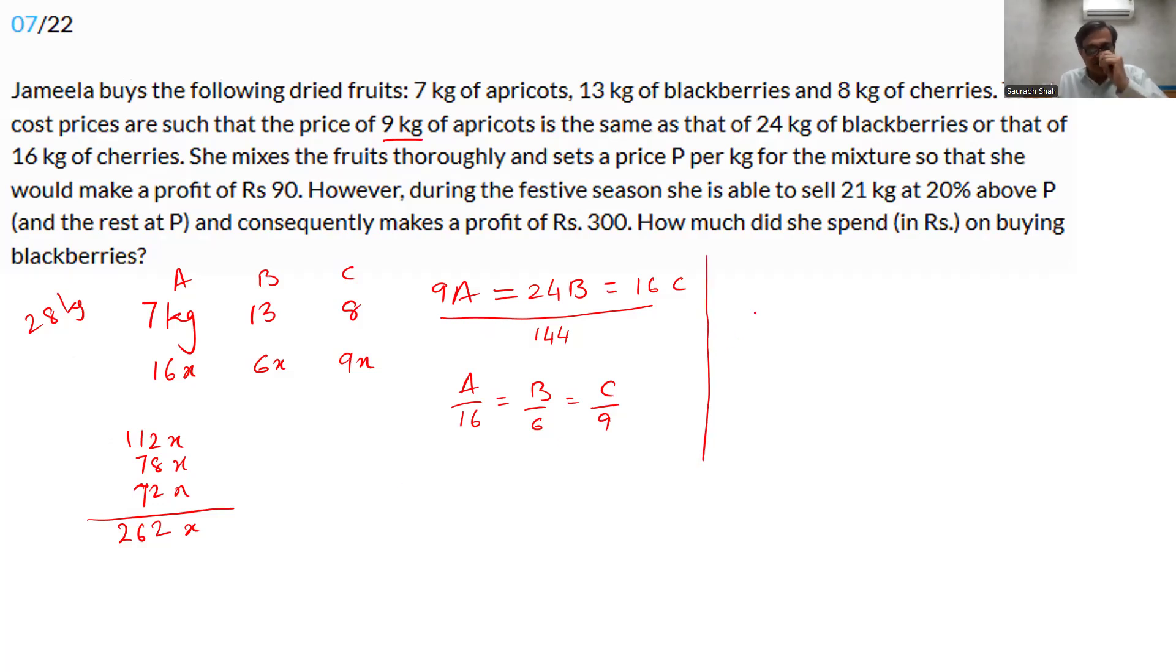Now let's work out something on the sales side. We already worked out the cost. On the sales part, the question says P is the cost. We are selling everything at the rate P. But if 21 kilograms are sold at 20% above P, there is an extra profit. Instead of 90 rupees profit, we have a 300 rupee profit. So extra 21 kilograms sold at extra cost of 20% of P is 210 rupees. So 20% of P is equal to 10 rupees. Price is 50 rupees. The selling price of the entire mixture, 28 kilograms is 50 rupees. So the total sales is 1400, out of which 90 is the profit. So the total cost is 1310. We already found the total cost to be 262x. So we have 262x is equal to 1310 and x is equal to 5.